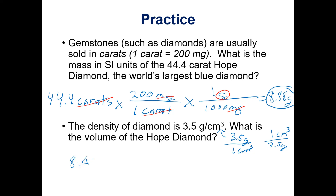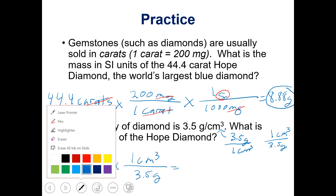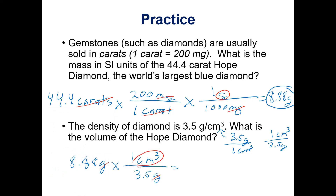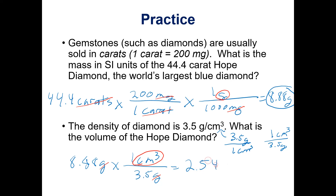We can use the density conversion factor to go from what we have to what we want. Taking the number of grams we calculated in the last step, since we have grams to start with we put grams on the bottom to cancel them out, and we're left with cubic centimeters. Keep the unrounded answer in your calculator — don't use the rounded answer or you'll introduce error. Divide by 3.5 and you should come up with 2.54 cubic centimeters.